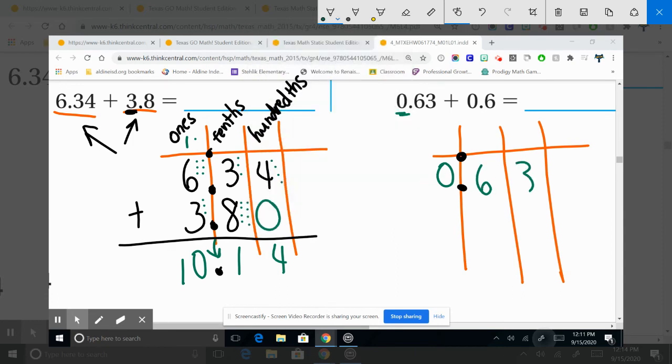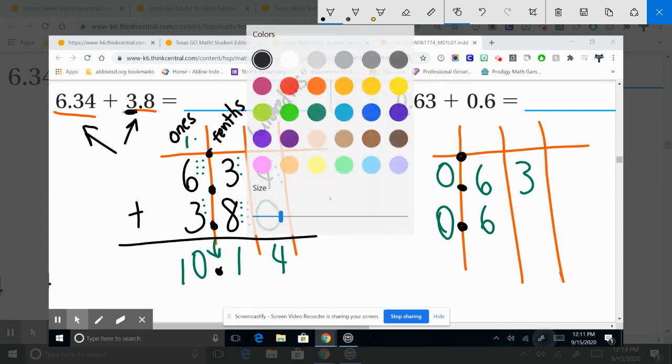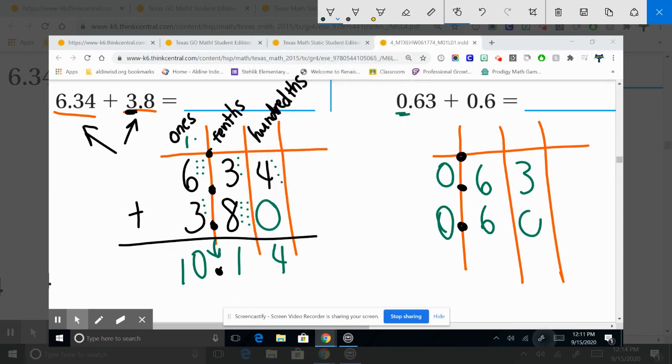Six and three. And then we have zero, six. And don't forget your decimal. And remember I said, if it's missing, add a zero to it.